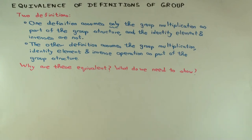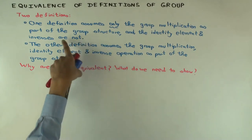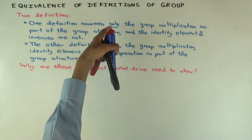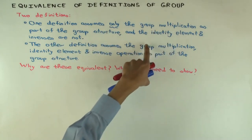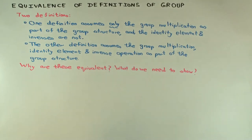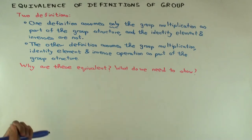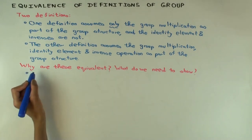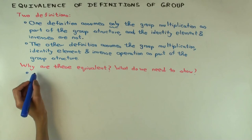If we did know that these two things are uniquely determined by the group multiplication, then we would have shown that the two definitions are equivalent. I think so — because if the identity element and inverse are uniquely determined by the group multiplication, then whether you just specify the group multiplication or whether you give all three pieces of information, it's the same thing. So, is the identity element uniquely determined by the group operation, and is the inverse operation uniquely determined?